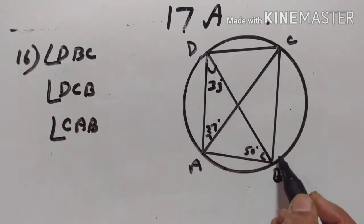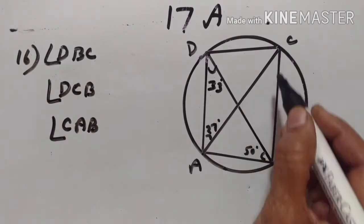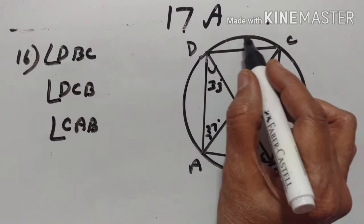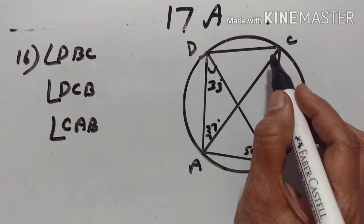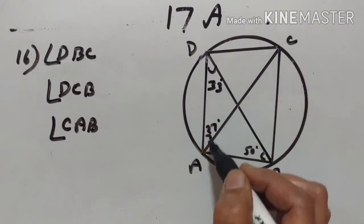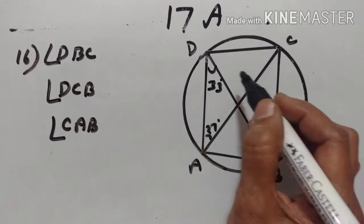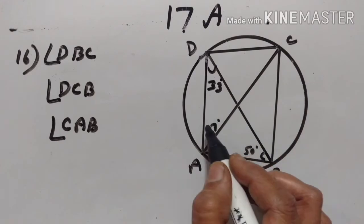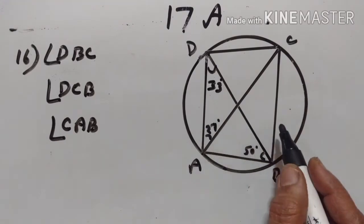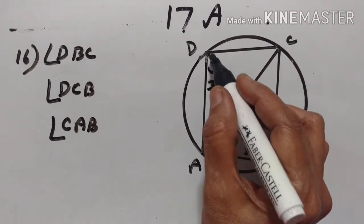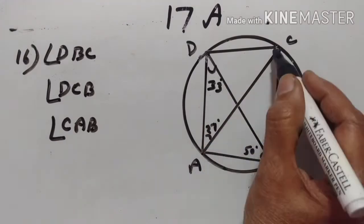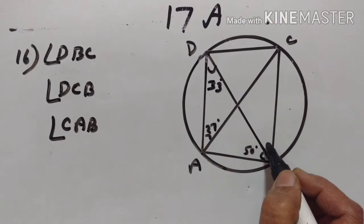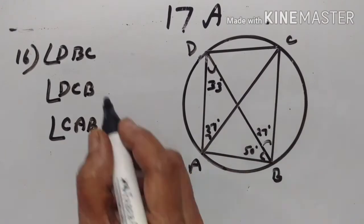Angle DBC. Arc DC subtends angle DAC and angle DBC — angles in the same segment. Therefore, angle DAC is equal to angle DBC, which is equal to 27 degrees.